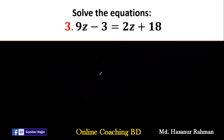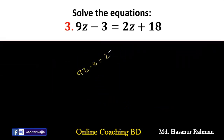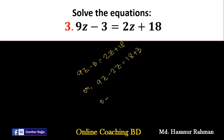Now number 3. Number 3 says 9j minus 3 equal to 2j plus 18. So rearranging: 9j minus 2j equal to 18 plus 3. 9j minus 2j is 7j, equal to 18 plus 3, that is 21.